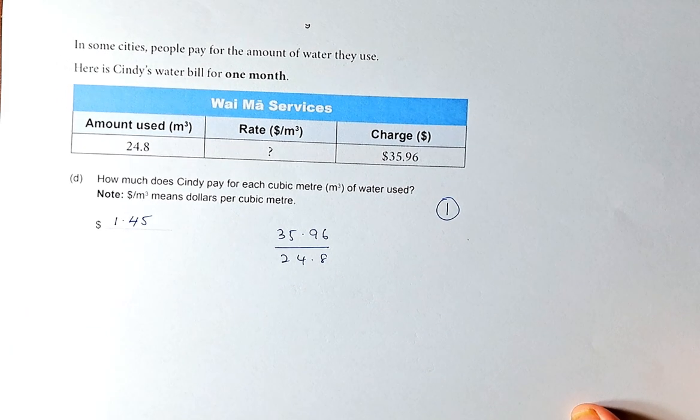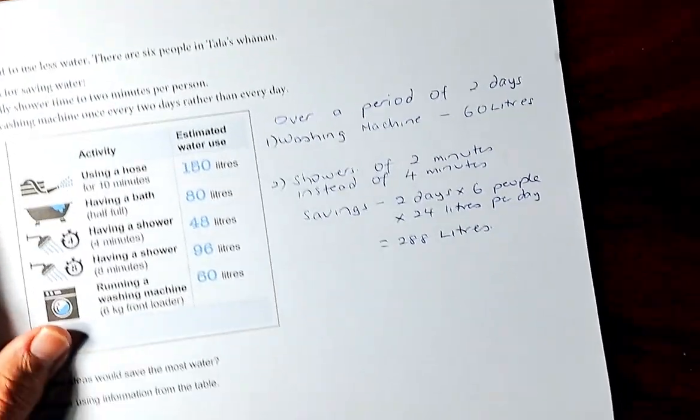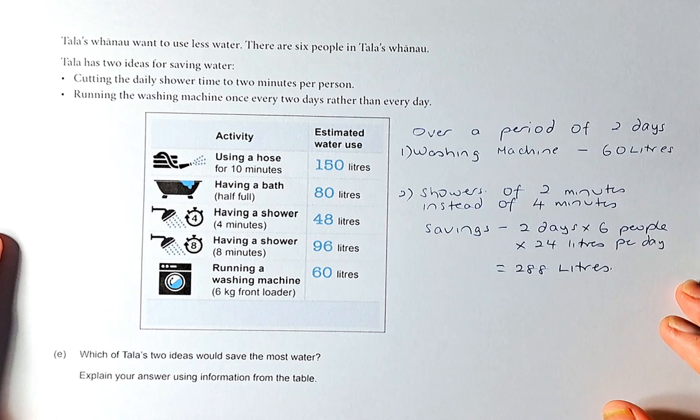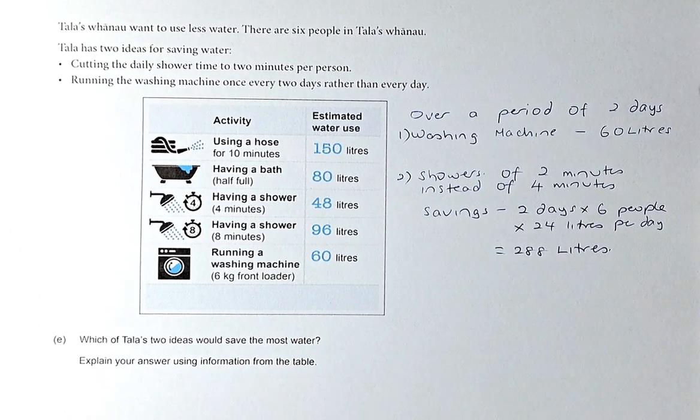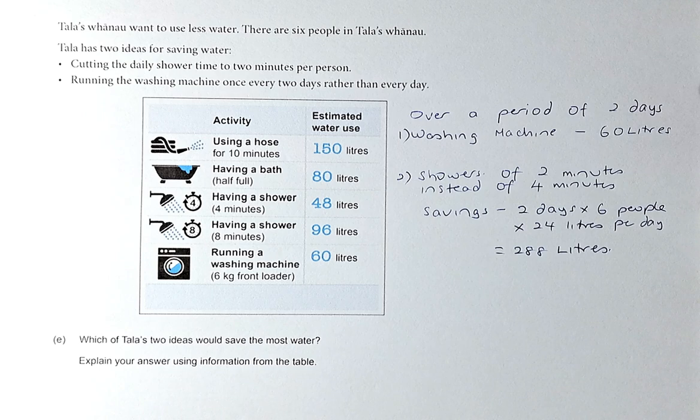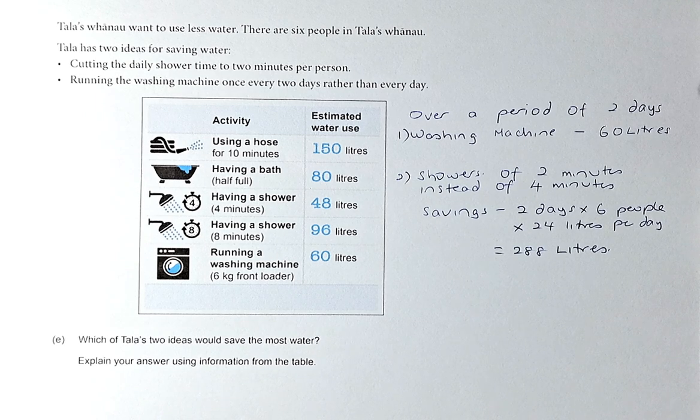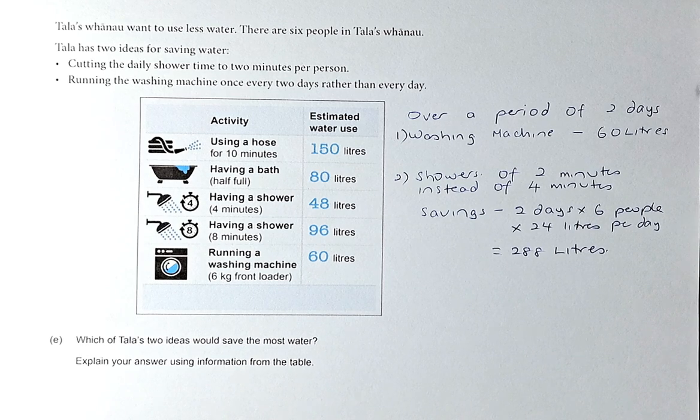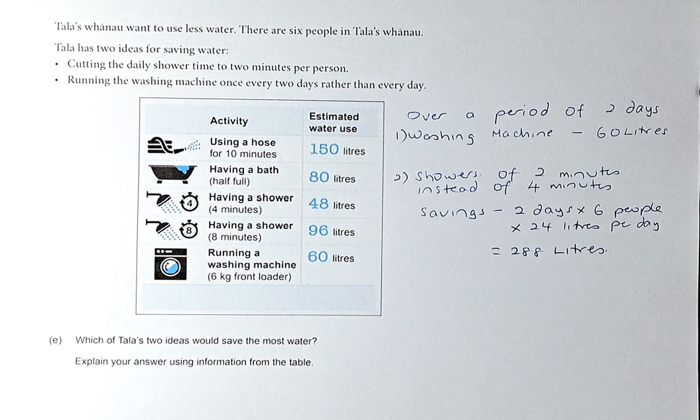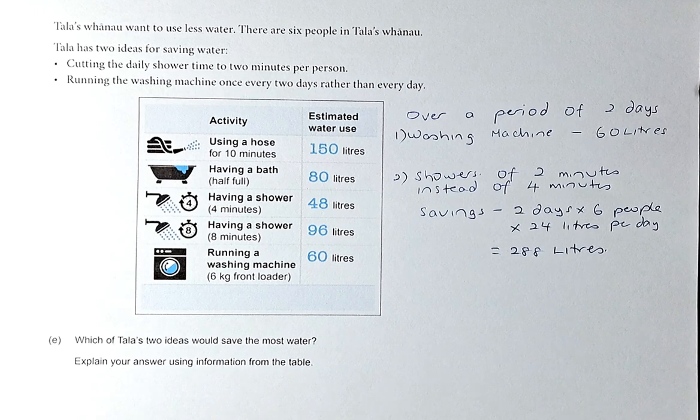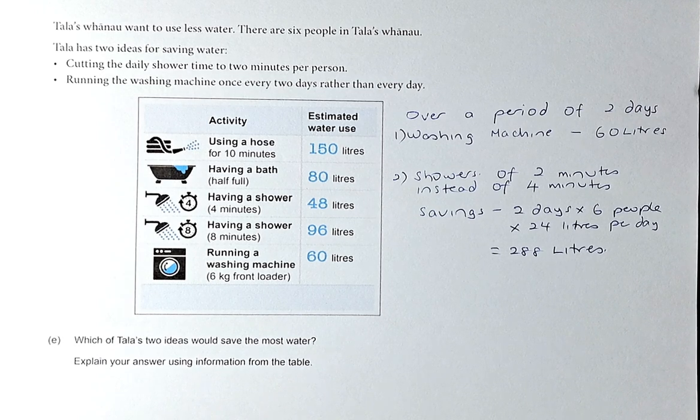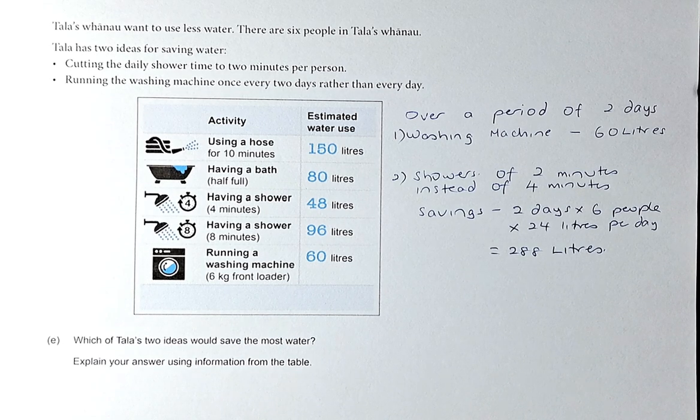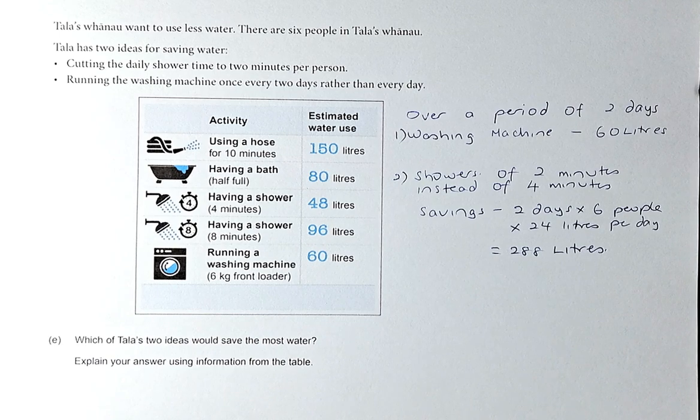Let's do question 3E. This is a bit more complicated and we need a bit of calculation in this question. Tala's family wants to use less water. There are six people in Tala's family. Tala has two ideas for saving water: First, to cut the daily shower time to two minutes per person, and secondly, running the washing machine only once every two days rather than every day. Which of Tala's two ideas would save the most water?